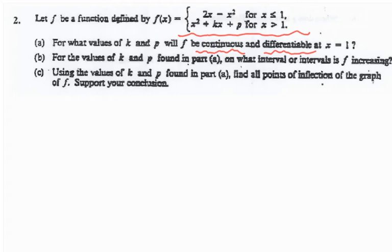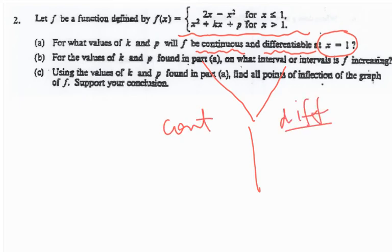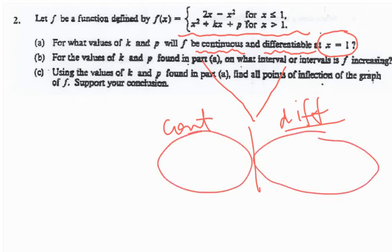When you work on part a, you have to use the fact that the function is continuous at x = 1 and differentiable at x = 1. Work together to figure out the continuity piece along with the differentiability piece. Remember that when you find the derivative of a piecewise function, you find the derivative in pieces. You're going to have to deal with the continuity and the differentiability in order to find the values of k and p.